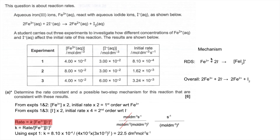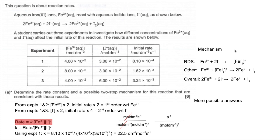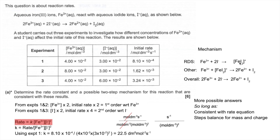That intermediate doesn't feature in the overall equation, so we need to get rid of it by making it a reactant in the second step, which also needs another Fe³⁺ to produce two Fe²⁺ and I₂. When you add the two steps together they cancel to give the overall equation. The rules are: the rate-determining step must be consistent with the rate equation, and each step must balance for mass and charge.